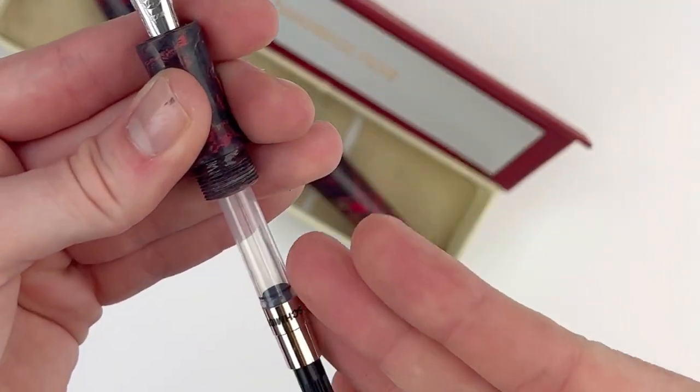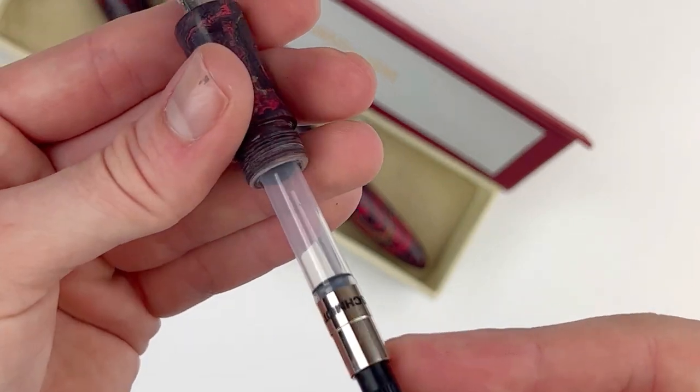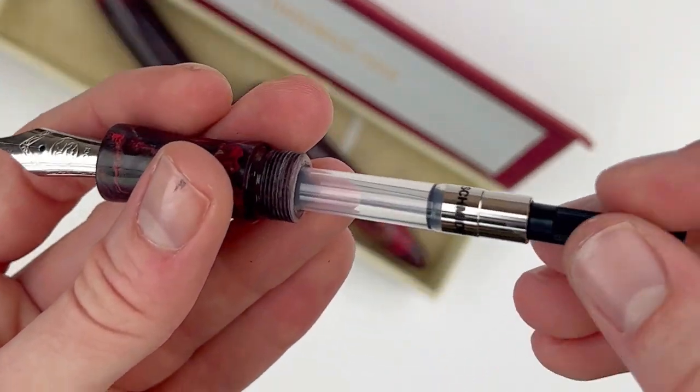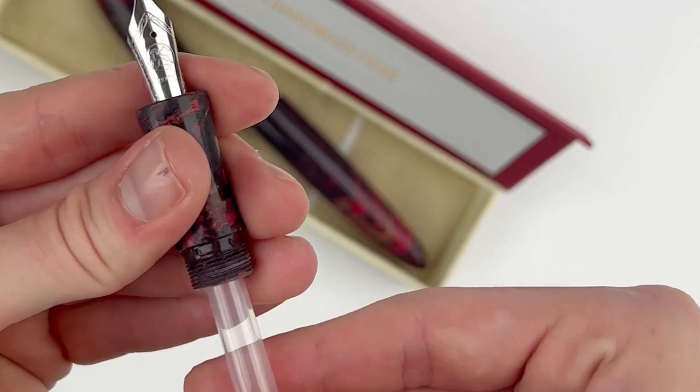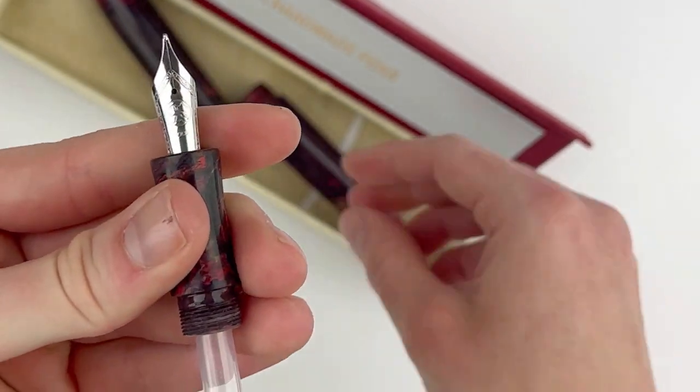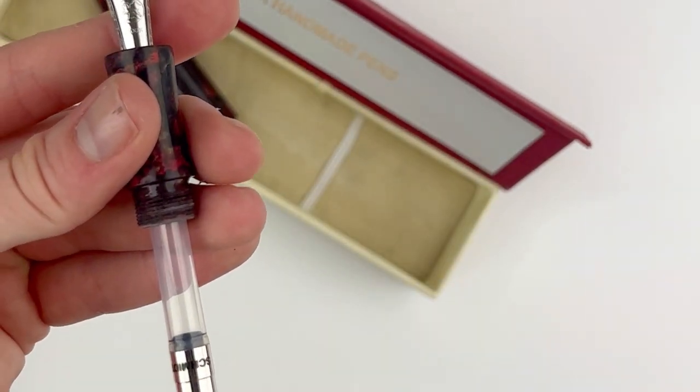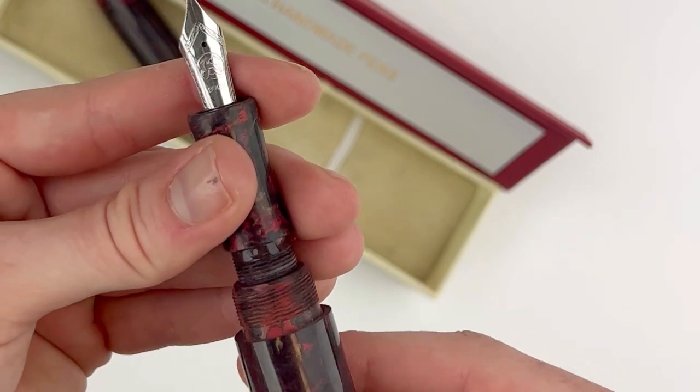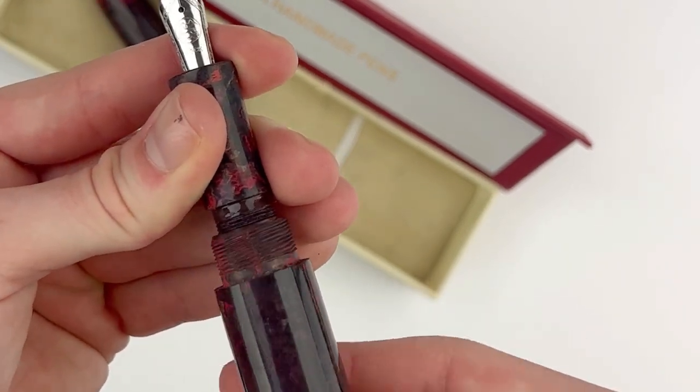It is easily removable, so you can pull the converter out, fill it with ink, put it back in, and you can begin writing. If you prefer cartridges, you can also put a cartridge in the same exact way the converter is accessed.